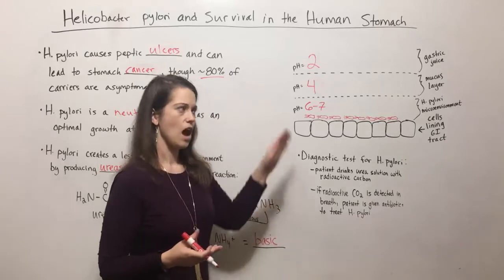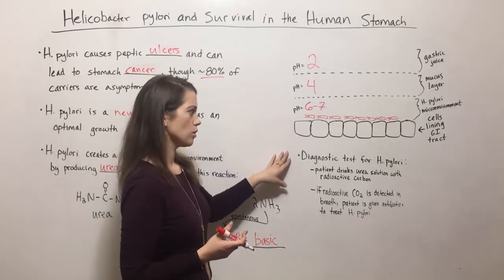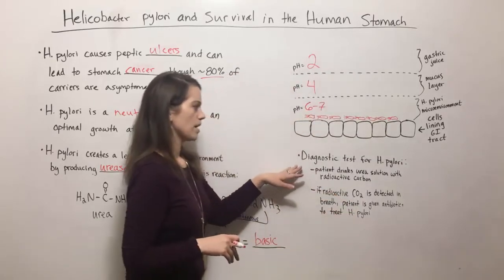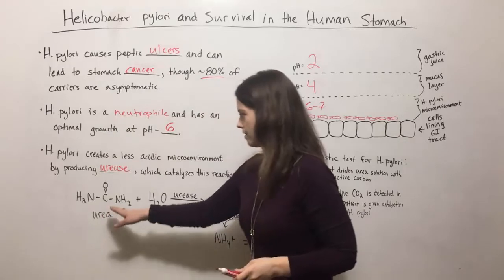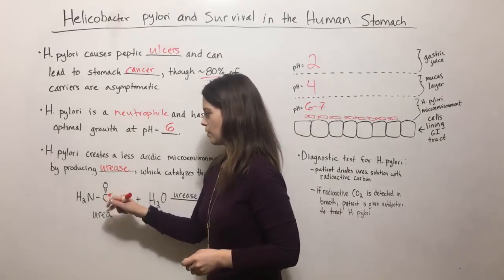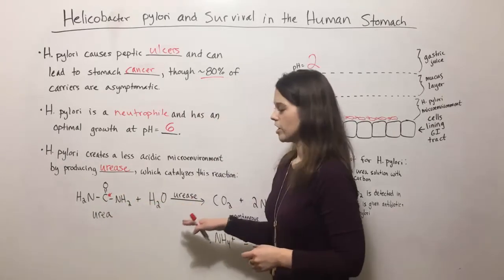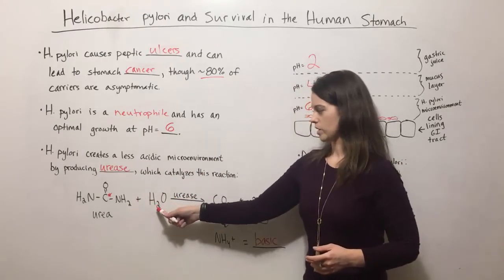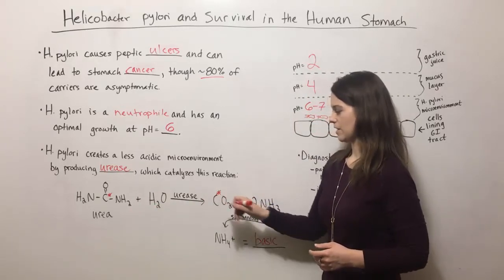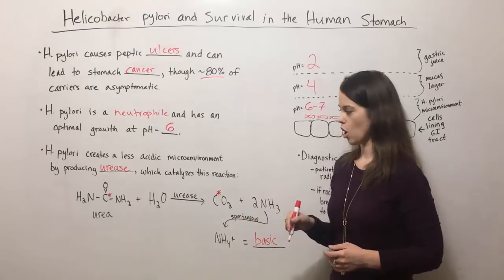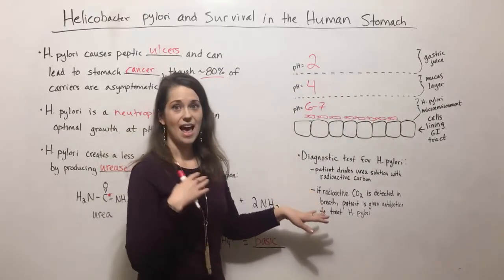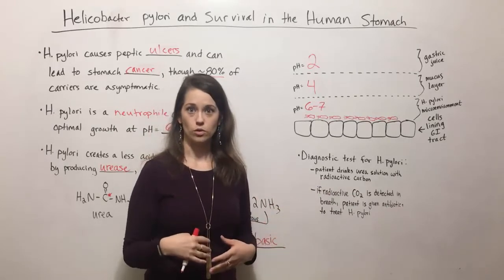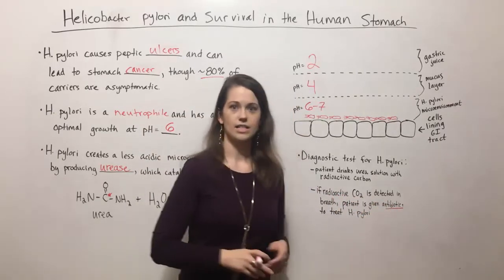And so now you can understand how it can survive in the human stomach. There's also a cool diagnostic test for Helicobacter pylori that is based on this reaction. It works because the patient drinks a solution of urea where the carbon is radioactive — indicated with an asterisk. If Helicobacter pylori is present and making urease, it's going to convert that urea with some water into carbon dioxide and ammonia. The carbon dioxide produced will also have that radioactive carbon. So if the patient exhales radioactive carbon dioxide, their doctor will know they have H. pylori in their stomach and can prescribe antibiotics to treat that infection.